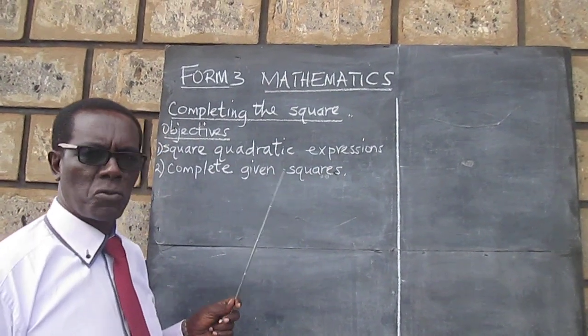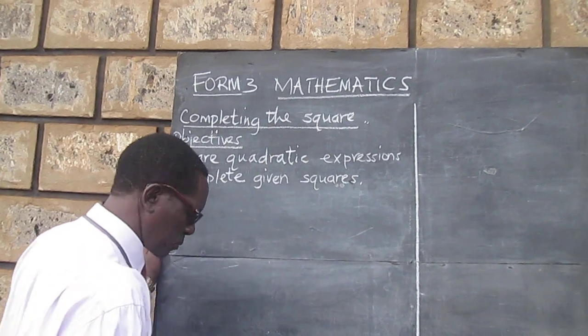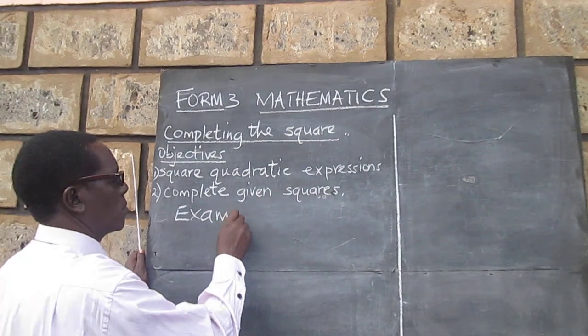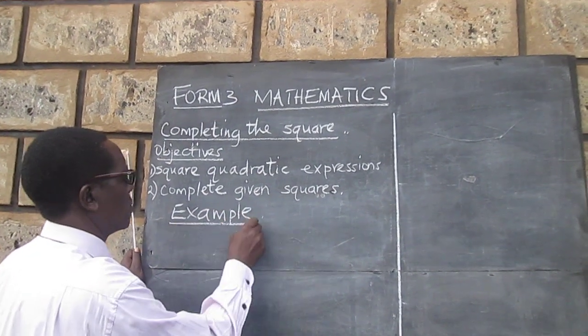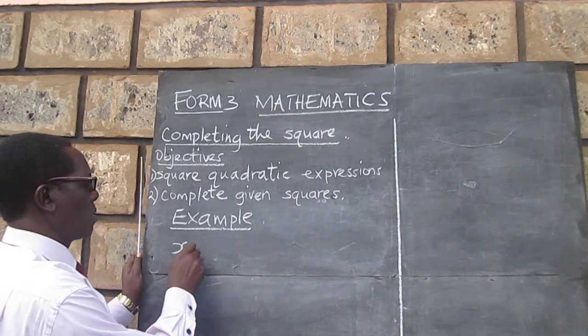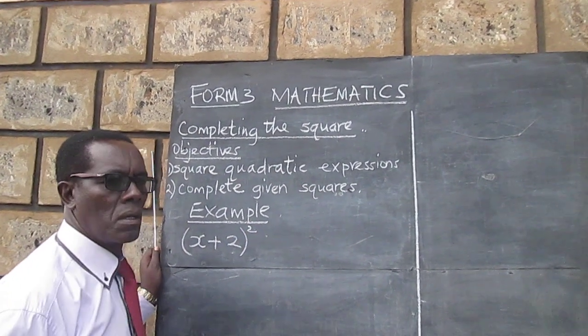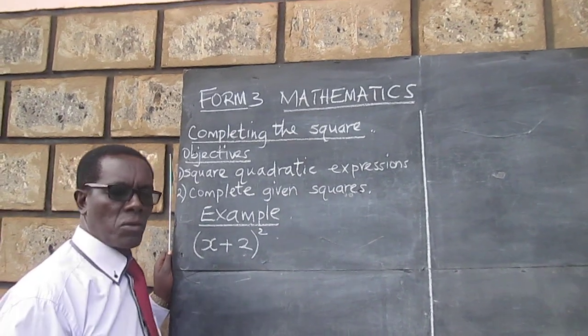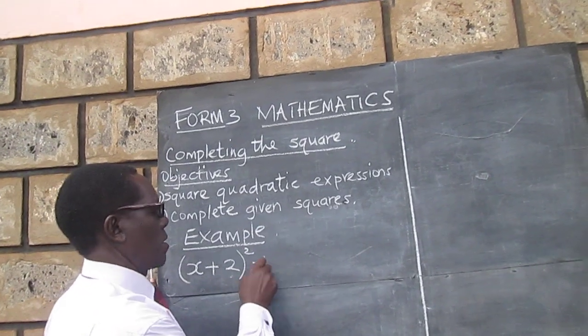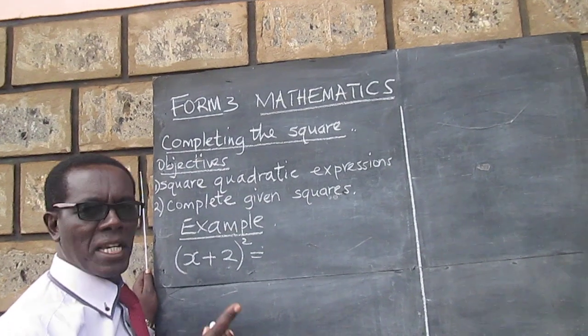So let's now move to our first objective, and square this expression. We would like to square this expression. And you see, this means we multiply x plus 2 by itself twice.